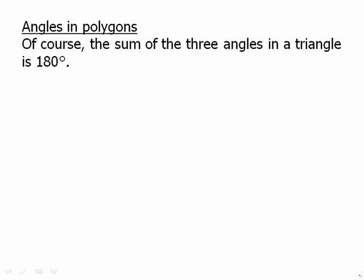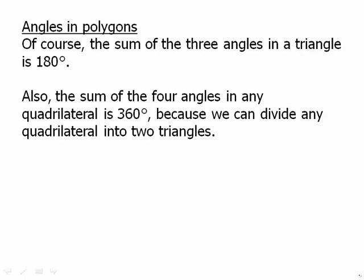Angles in polygons. Of course the sum of the three angles in a triangle is 180 degrees. The sum of the four angles in a quadrilateral is 360 degrees because we can divide a quadrilateral into two triangles along a diagonal. We can extend this pattern to higher polygons.